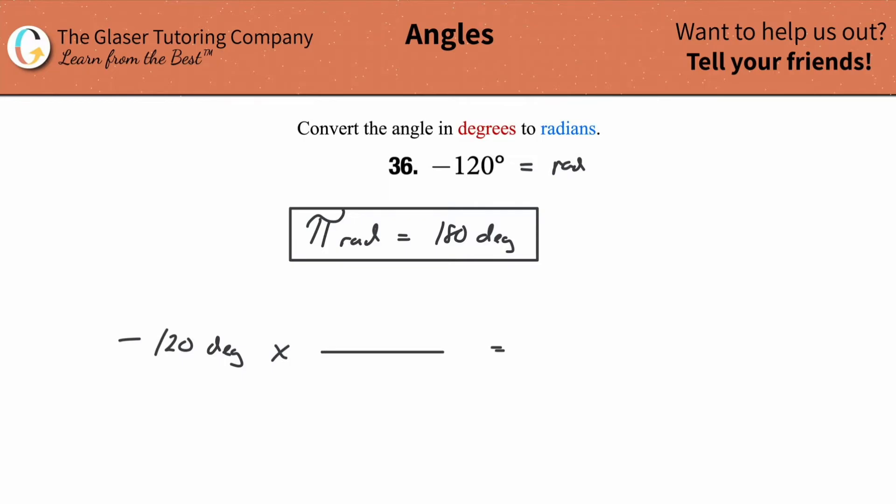Now what I need to do is set up my conversion fraction here. This fraction involves a known relationship between radians and degrees. Hence why we did this first.